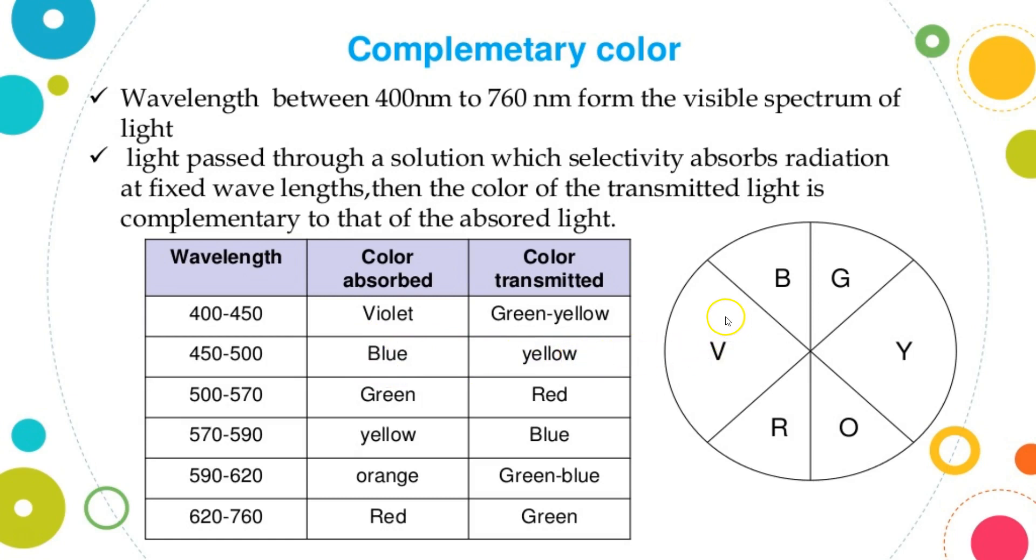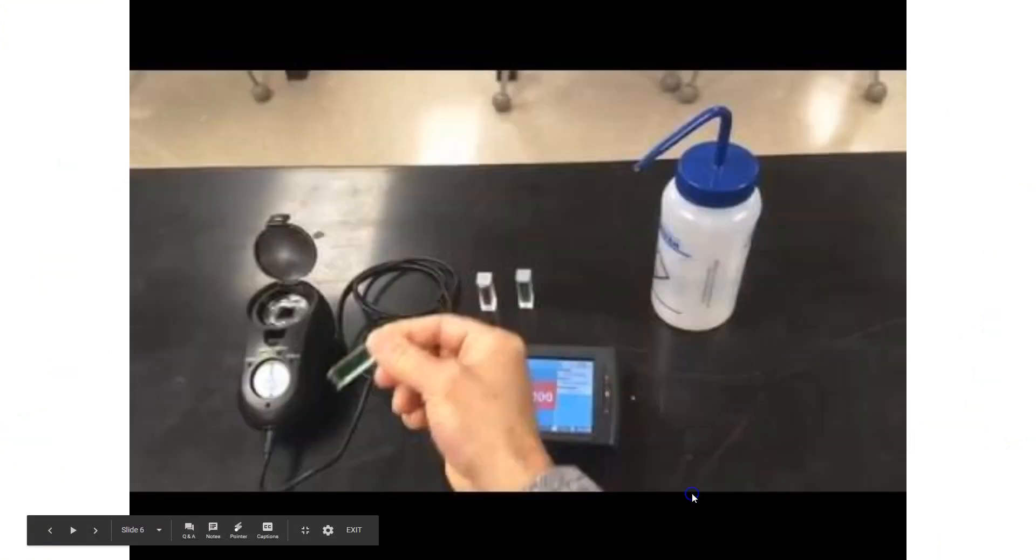You can see on the color wheel how that works, where you end up absorbing the complementary color, which is then the color of light that you can see. This chart gives you an overview of the different wavelengths shot through the sample, which color would be absorbed, and which color is transmitted or passed through the substance.